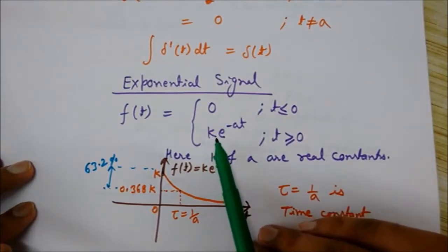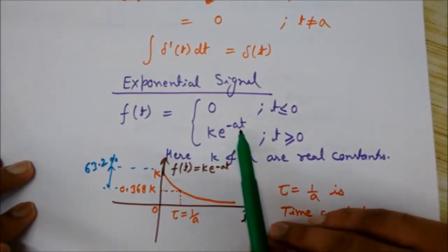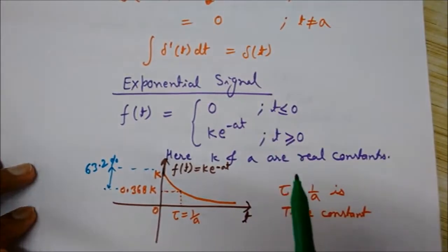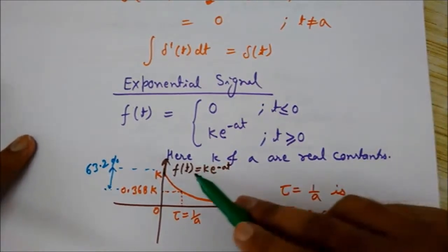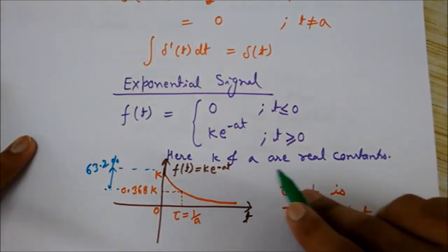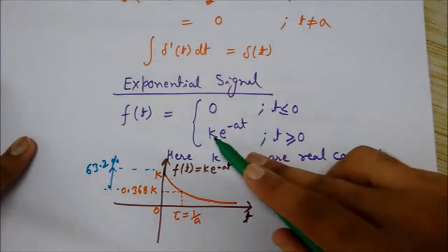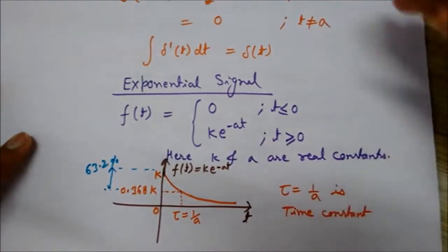equals to k times e raised to the power minus at for t greater than or equal to 0. Here, k and a are real constants.